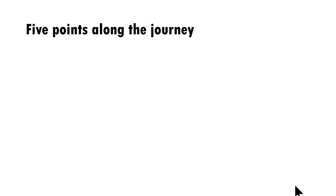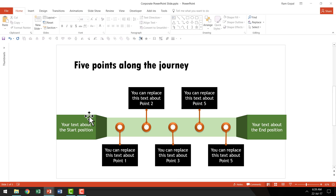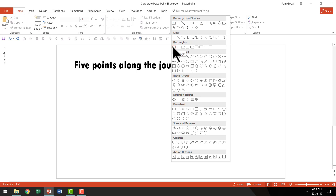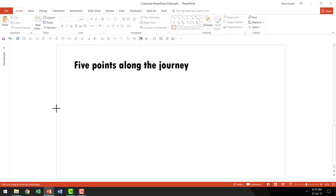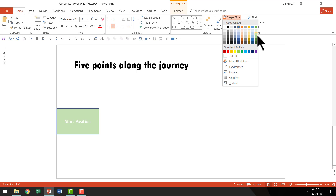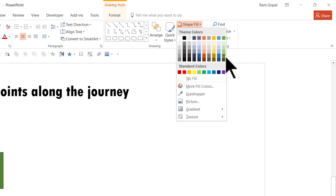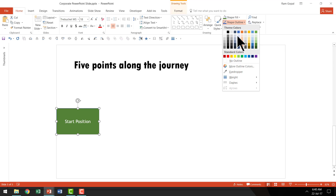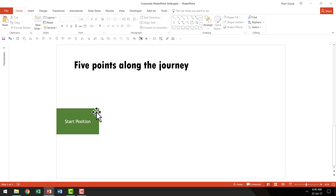Here we are on a new slide. Let us start with the first one, which is defining the start position. We go to the AutoShapes menu, pick up the rectangle tool, and draw a rectangle. This is the size we want and we can write our start position. I am going to give it green color — specifically Green Accent 6 — and then go to Shape Outline and say No Outline.